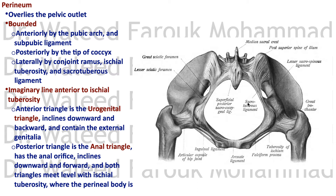By an imaginary line through the ischial tuberosities, you can divide this area into two triangles: an anterior triangle and a posterior triangle. The posterior triangle is the anal triangle that contains the anal orifice, and the anterior triangle is the urogenital triangle that contains the external genitalia. The urogenital triangle inclines downwards and backwards, and the anal triangle inclines downwards and forwards, meeting at the perineal body in the middle.